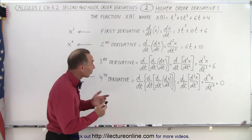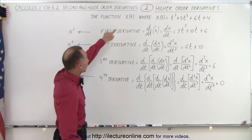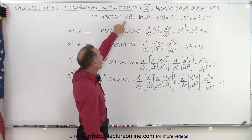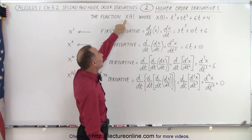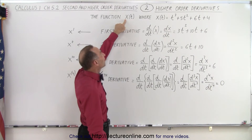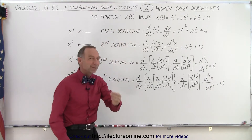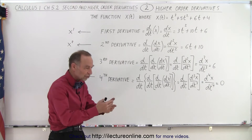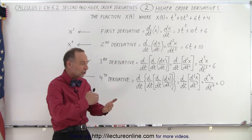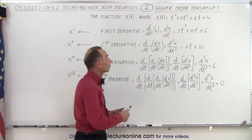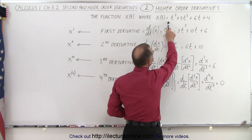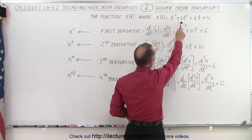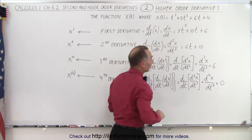So what does it look like? When we start with a function, let's say x is a function of t. X is the dependent variable and t is the independent variable, so t can change and then x will change accordingly. Here's a function where x equals t cubed plus 5t squared plus 6t plus 4.